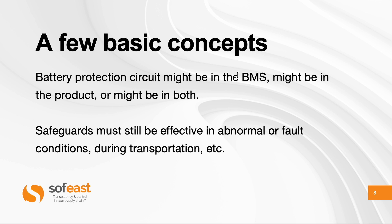The protection circuit might be in the battery management system, usually in the battery pack itself; it might be in the product — for example, the smartphone might have a battery protection circuit — or sometimes even at the cell level, or in several of them. You need to look at the design of the whole product, the pack, and the cell — not just in isolation.